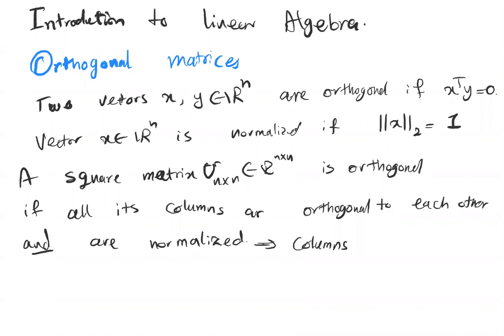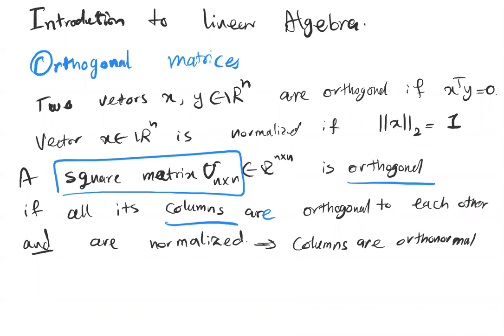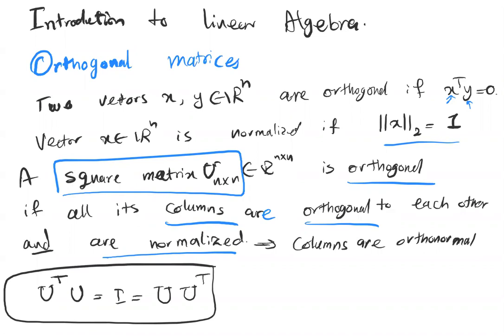In this case we refer to the columns as orthonormal columns. So in order for a square matrix U to be orthogonal, all of its columns should be orthogonal — meaning if x is one column and y is another, x transpose y should equal zero — and also they should be normalized, meaning the 2-norm equals one. In this case, U transpose U is equal to the identity matrix, which is also equal to U U transpose.